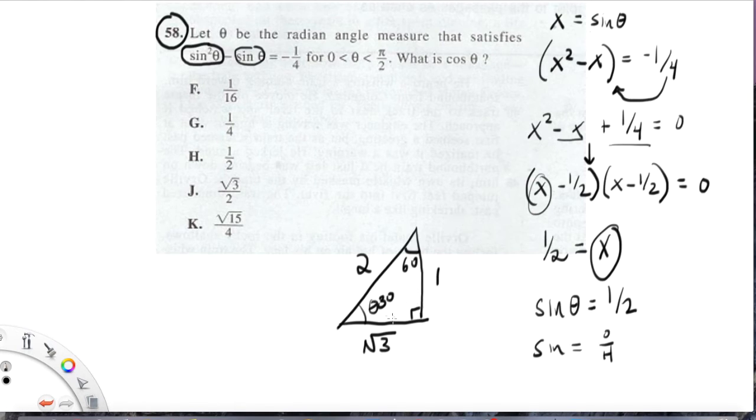However, we have a 30-60-90 here. They're asking for the cosine of theta. Remember, this is still theta right here. We've labeled this 30. The cosine is adjacent. Let's write that. Cosine is adjacent over hypotenuse. Well, adjacent is going to be root three, hypotenuse two, adjacent over hypotenuse, answer choice J, root three over two.